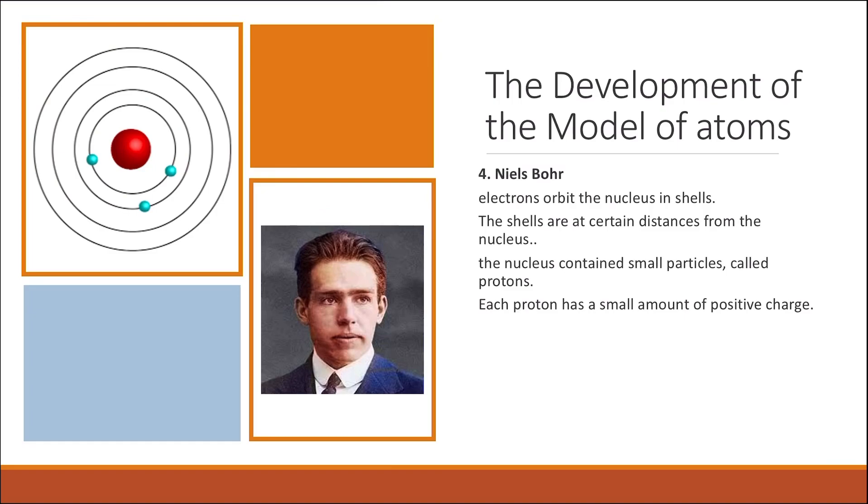So the main discovery for Niels Bohr was the discovery of the shells of the electrons. As we can see, the electrons here don't just exist randomly around the nucleus, but they actually orbit the nucleus in specific shells, and these shells exist at certain distances from the nucleus.